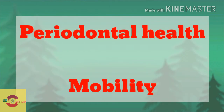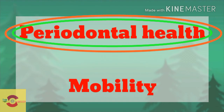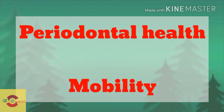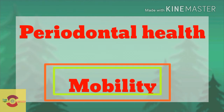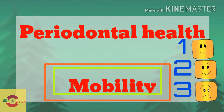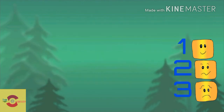Regarding periodontal health of the abutment, any kind of periodontal disease must be eliminated before the prosthesis is given. The design of retainers and pontics should promote effective oral hygiene. An important periodontal factor is mobility — Miller's mobility value of 1 is acceptable, value of 2 requires special consideration, and value of 3 is not suitable as an abutment.